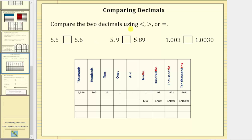We're asked to compare two decimals using less than, greater than, or equals. First we want to compare 5.5 and 5.6.